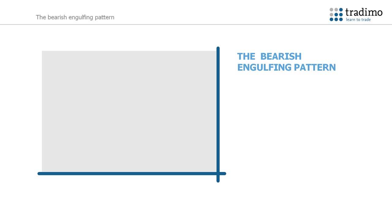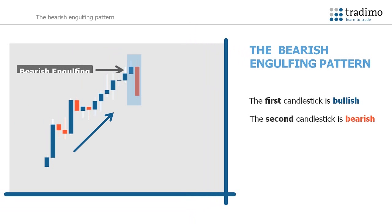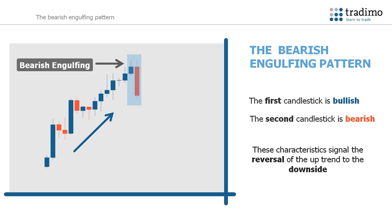Let's now have a look at the characteristics of a bearish engulfing pattern. You can see in this example the market is in an uptrend. Notice the highlighted area where the first candlestick of the pattern is bullish, shown by its blue colour. The second candlestick in the pattern is bearish, indicated by its orange colour, and engulfs the body of the preceding bullish candlestick. These characteristics signal the reversal of the uptrend to the downside and demonstrate how the bulls were overpowered by the bears.